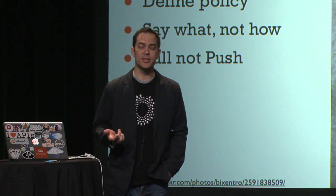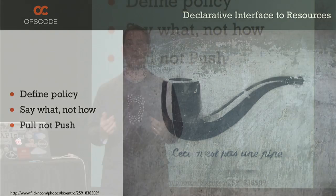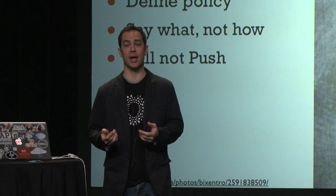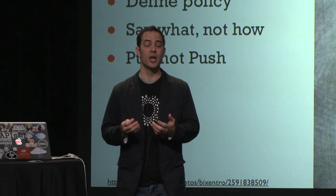Chef does this by defining the policy for how your infrastructure is going to work. It doesn't say you have to know the exact details of how something gets configured. You say, I need the Apache 2 package installed. I don't care how it's installed — if I change operating systems, I don't want to have to go and change the commands.